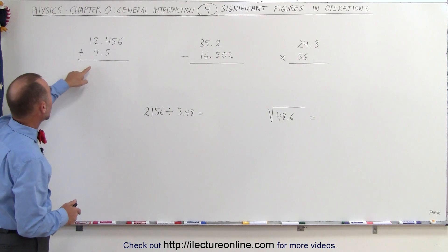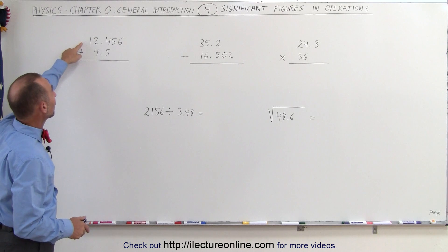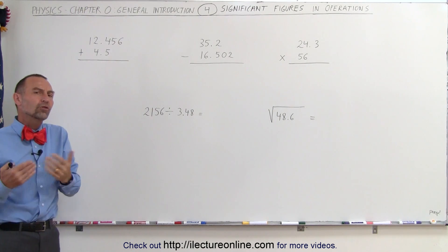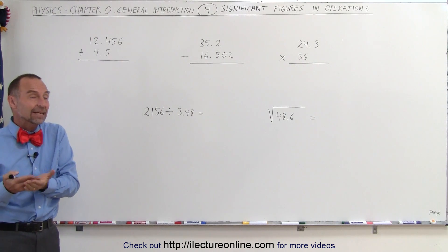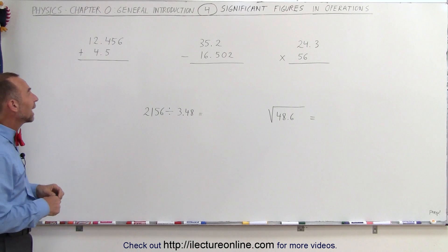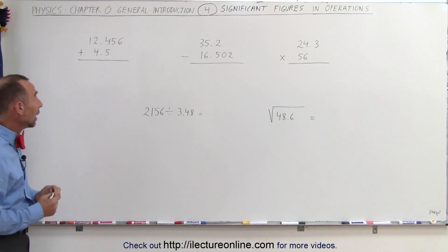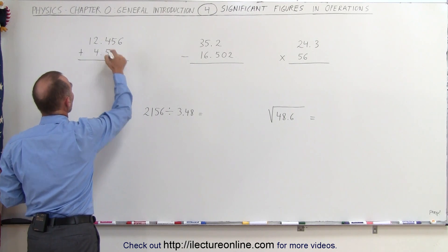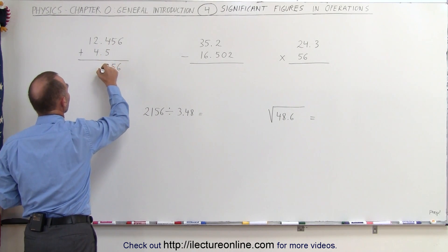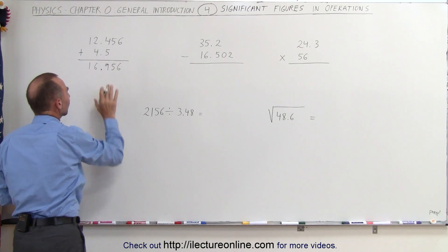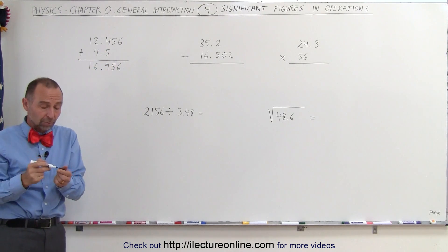For example, here we have two numbers that we're adding. One number has five significant figures. The other has two significant figures. So what should be the number of significant figures in the final answer? Well, let's go ahead and do the addition and see what we get. So here we have 6 + 0 gives us 6, 5 + 0 gives us 5, 4 + 5 gives us 9, the decimal place 2 + 4 is 6, and we have the 1 here.